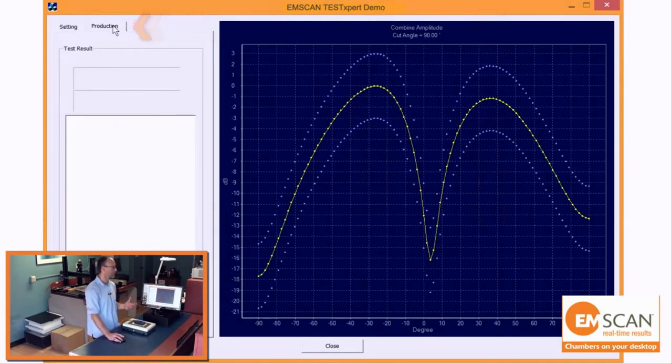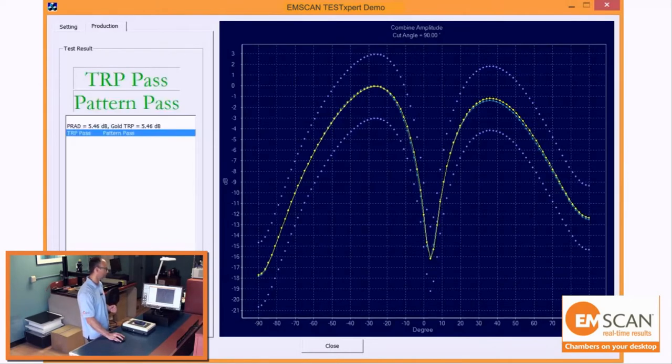Now if we come over to production testing, we have a very simple interface that anyone can use. You'd simply place the device under test on here, hit the test button, and you immediately see if it passes both TRP value and pattern comparison.